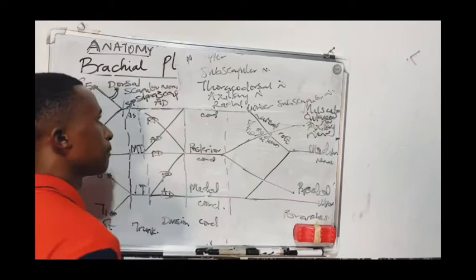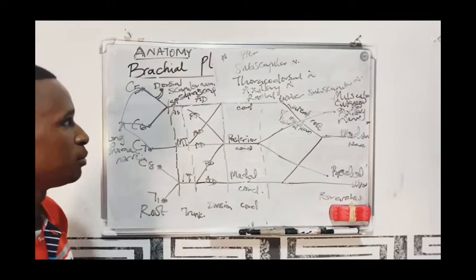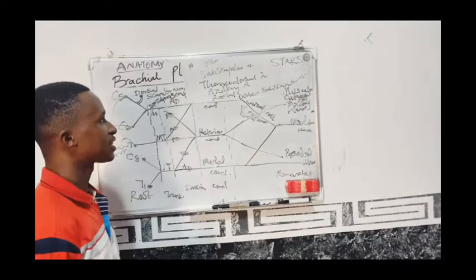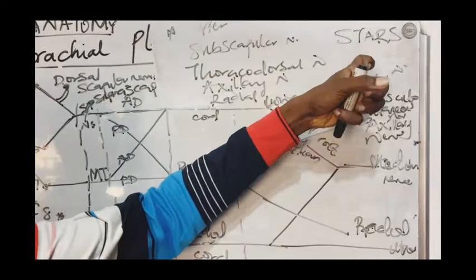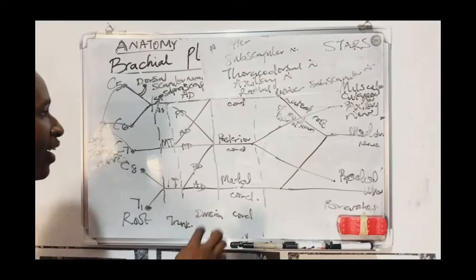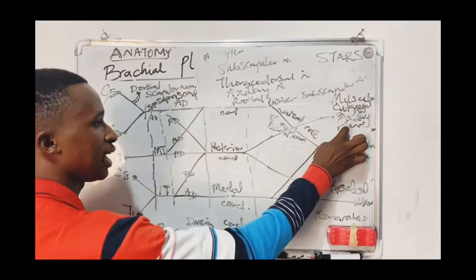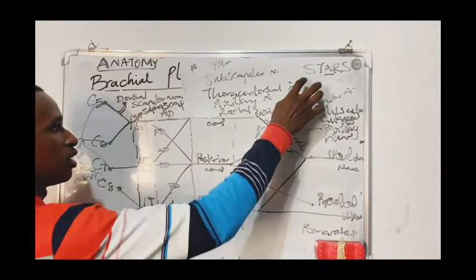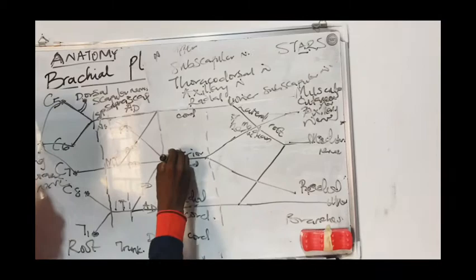You can remember the five branches from the posterior cord with the mnemonic STARS: S stands for upper subscapular nerve, T stands for thoracodorsal nerve, A stands for axillary nerve, R stands for radial nerve, and S stands for lower subscapular nerve. Of these five branches, two are terminal branches — the axillary nerve and the radial nerve. Upper subscapular, lower subscapular, and thoracodorsal nerve are side branches.